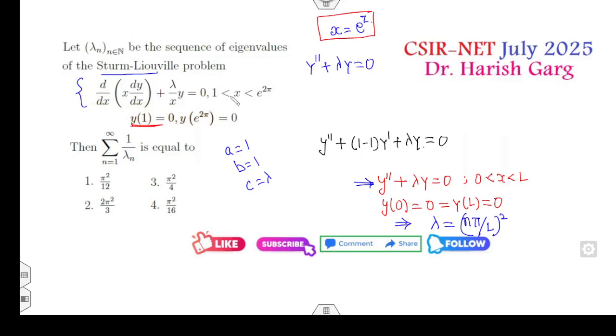By using the substitution, what is my initial condition? When x = 1, z = 0. And when x = e^(2π), the value of z will be 2π. Clearly it satisfies my given requirements. Therefore, the value of lambda is (nπ/L)² = (nπ/2π)² = n²/4.